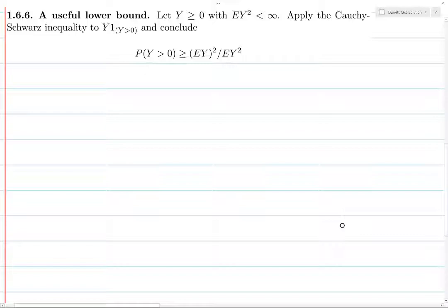The nice thing is it tells you how to go about doing this. It says to just apply Cauchy-Schwarz to this function here.